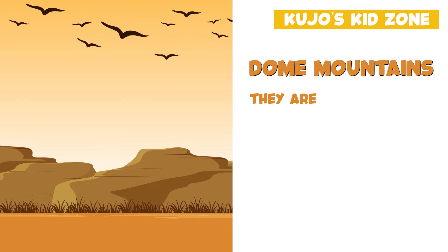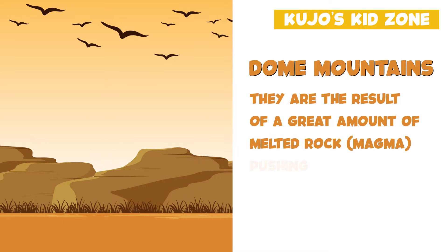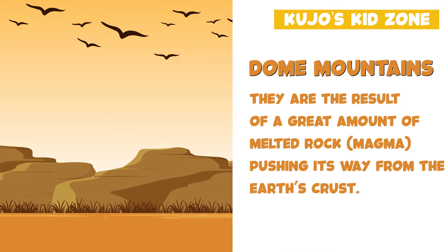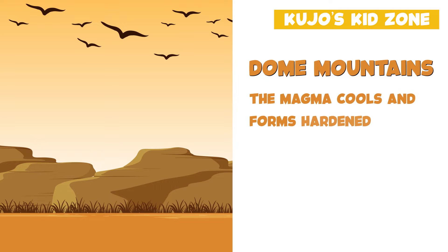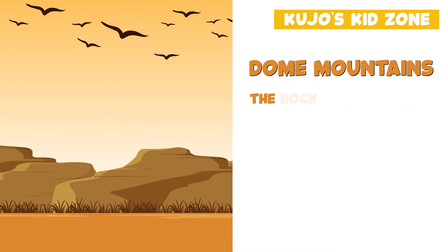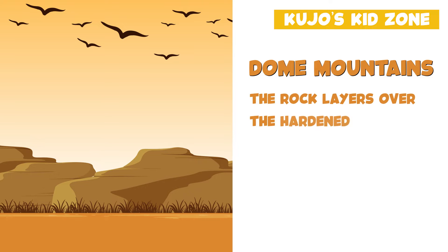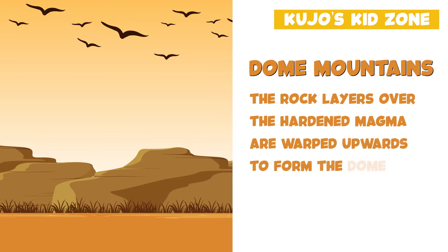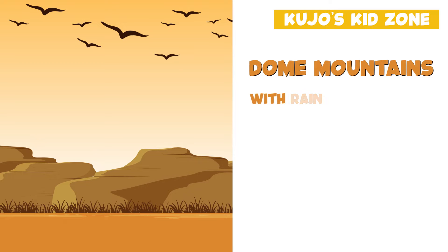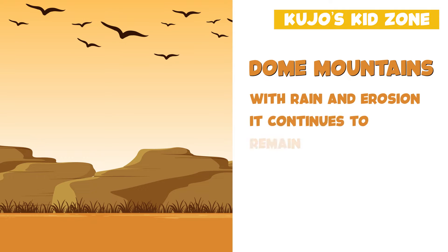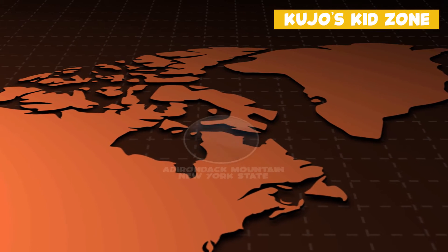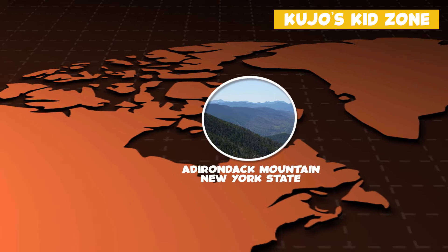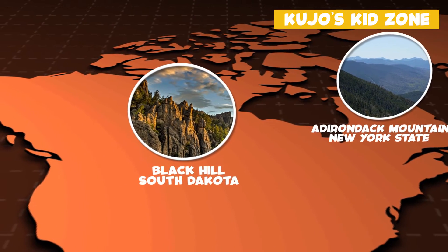Dome mountains are the result of a great amount of melted rock, magma, pushing its way up underneath the Earth's crust. The magma cools and forms hardened rock. The rock layers over the hardened magma are warped upward to form the dome. With rain and erosion, it continues to remain smooth. An example would be the Adirondack Mountains of New York State or the Black Hills of South Dakota.